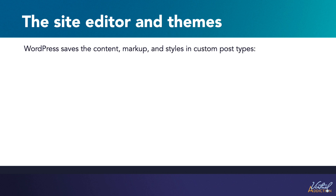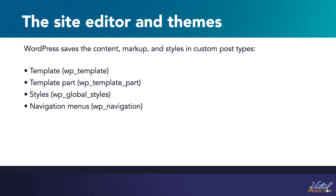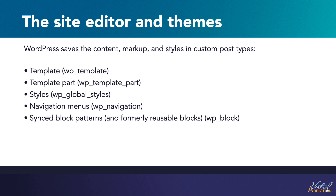When you update or save a design in the site editor, WordPress saves the changes in the database. WordPress saves the content, markup, and styles in custom post types. These are things like template, which uses WP_template; template parts, which uses WP_template_part; styles, which uses WP_global_styles; navigation menus, which uses WP_navigation; and synced block patterns, formerly reusable blocks, which uses the WP_block markup.